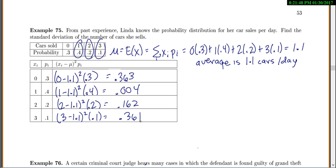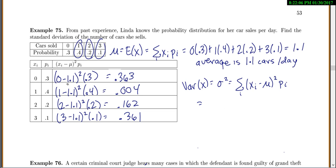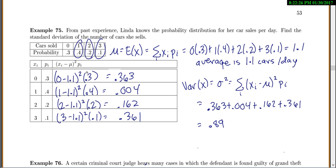Now that we've done all the preliminary work, we can find the variance of x, or sigma squared. We take each x_i minus the mean, squared, times the probability, and add them all up. So 0.363 plus 0.004 plus 0.162 plus 0.361 equals 0.89. If you follow your units, this was cars minus the average of cars, squared, times the probability — so this is actually cars squared.